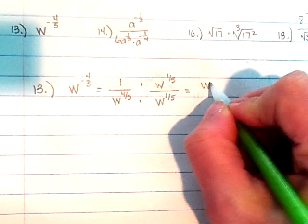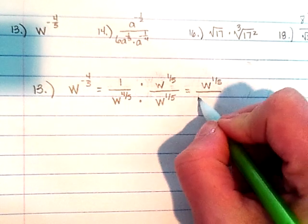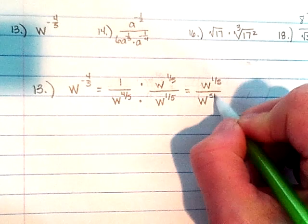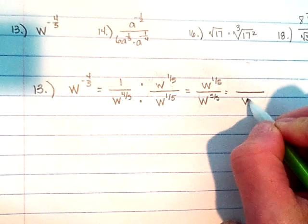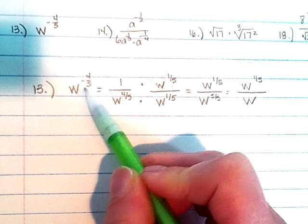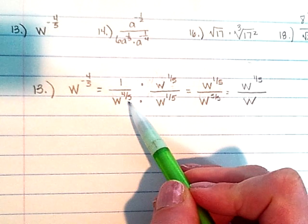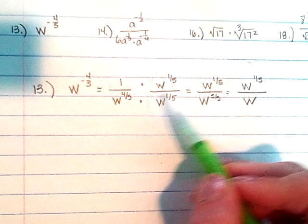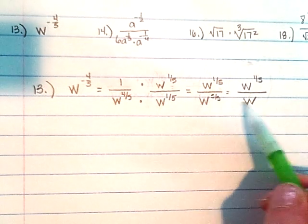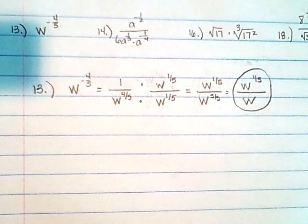On top I'll just have w to the one-fifth. On the bottom, I repeat the base and add the exponents to get the five-fifths power, or simply just w. So w to the negative four-fifths power — I put it in the denominator to make it positive, then rationalized to make the whole denominator be one. This is the simplified version. That was number 13.